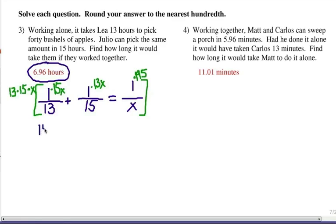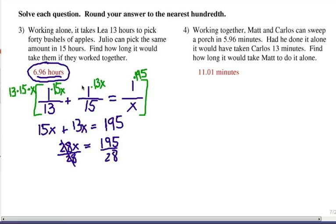What do we have? 15x plus 13x equals 195. We use our algebra skills here and solve for x. So we combine the x terms together. So it would be 28x equals 195. And we're going to want to isolate the x, so we're dividing both sides by 28. And as you can see, when we divide that out, round to the nearest hundredth, yes, we will get 6.96 hours when they work together.